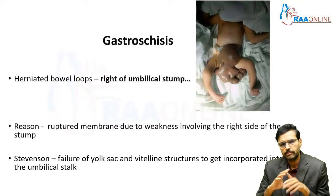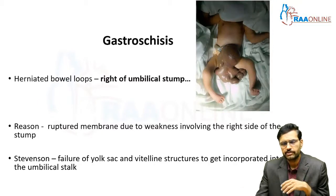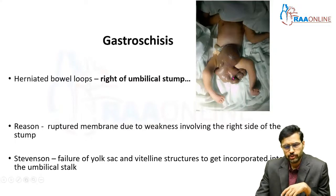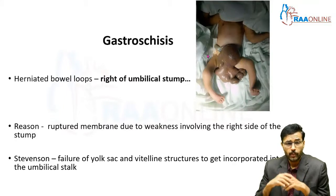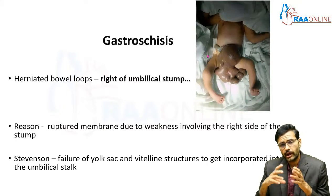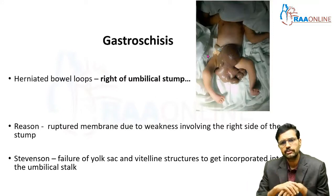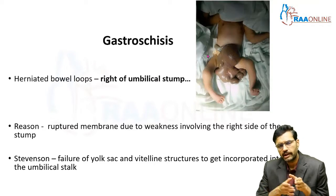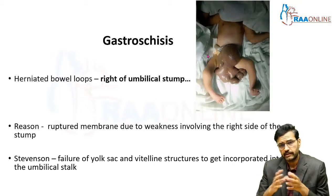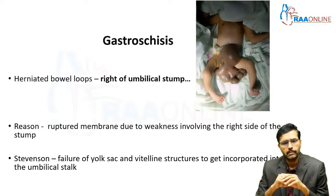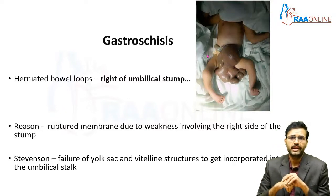In gastroschisis, the herniated bowel loops do not have a covering membrane or any layer, as you can see here. This usually occurs to the right of the umbilical stump. Why does gastroschisis occur? It is possibly because of the rupture of the membrane containing the herniated bowel loops due to weakness involving the right side of the umbilical stump. Stevenson proposed another theory stating that there is failure of the yolk sac and vitelline structures to get incorporated into the umbilical stalk, causing gastroschisis to occur.